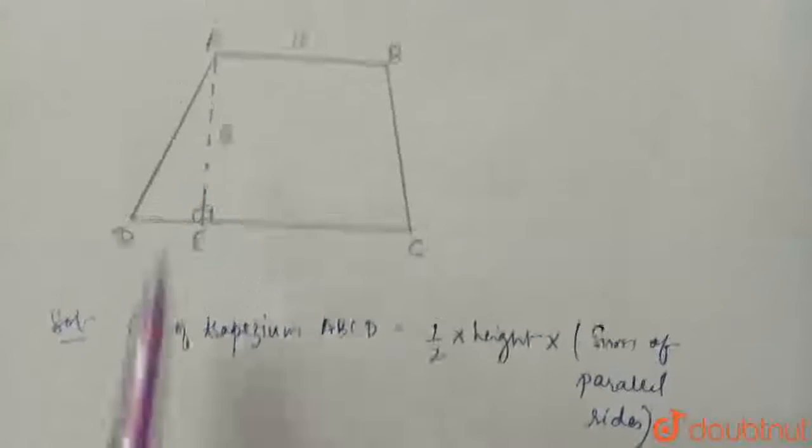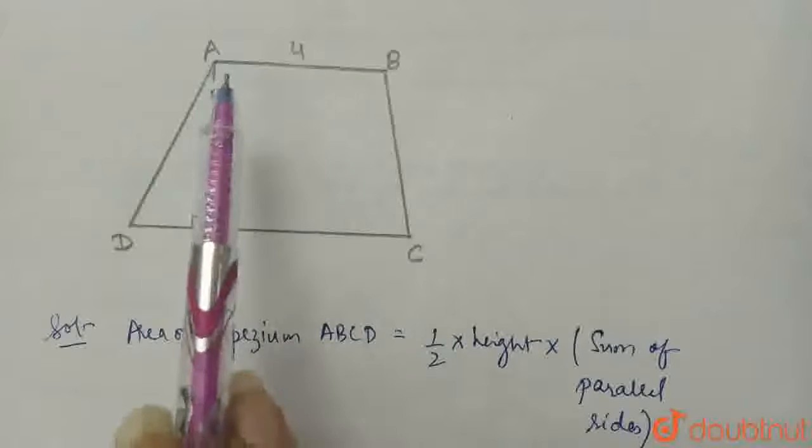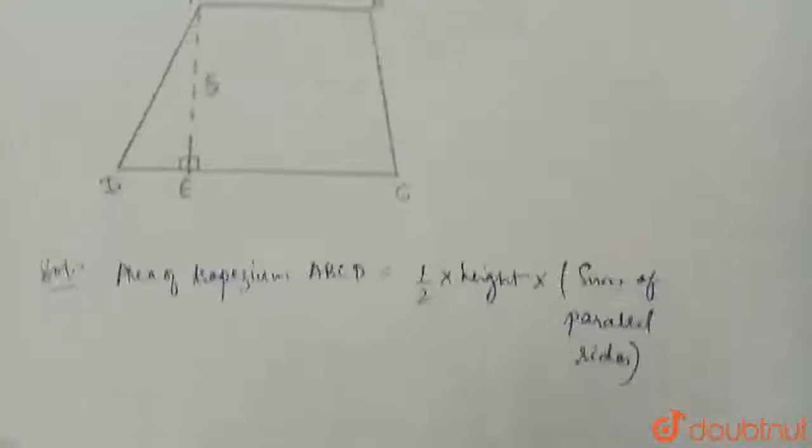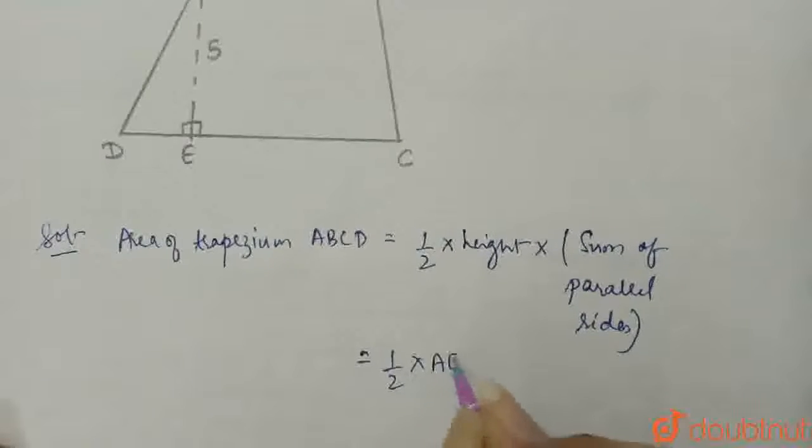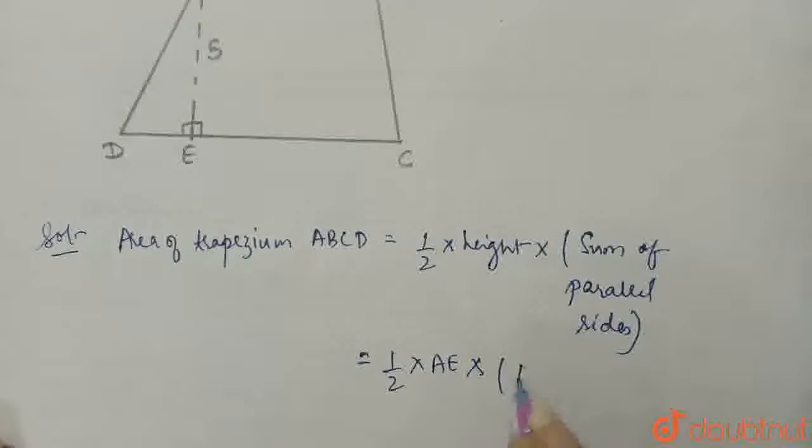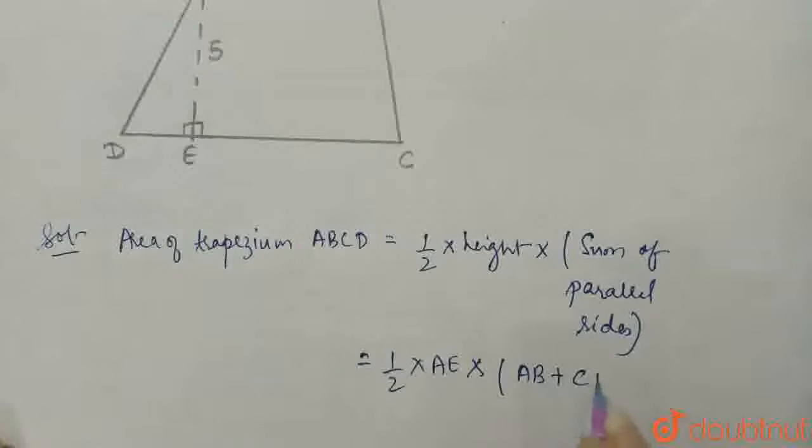The height is AE and parallel sides are AB and CD. So the formula is half times AE times (AB plus CD).